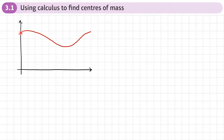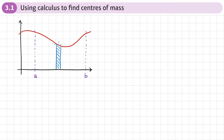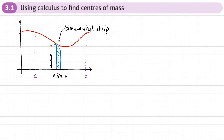We're going to start by imagining we want to find the centre of mass of this shape, between points A and B. We're going to divide the shape up into strips — each called an elemental strip — that has a height of y and a width of delta x. The area of one elemental strip is therefore delta x times y, or y delta x.